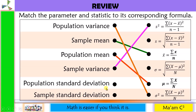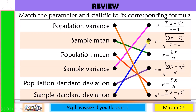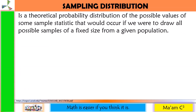Population standard deviation: we are looking for a variable raised to the first power, and since it's population, a Greek letter. So this is the answer. And last one: again a variable raised to the first power, but this time a Roman letter — that is the sample standard deviation. Let us now define sampling distribution.